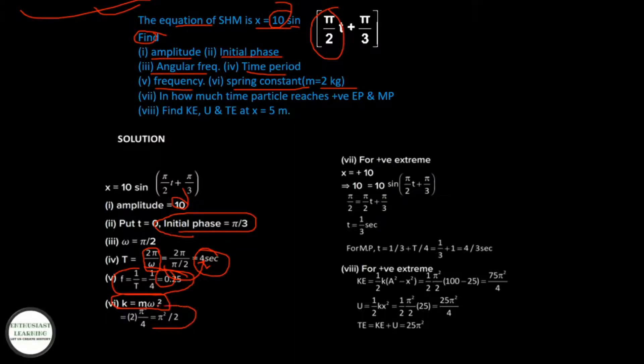(vii) In how much time does particle reach positive extreme position and mean position? For positive extreme, x = +10, where 10 = sin((π/2)t + π/3). Solving: (π/2) = (π/2)t + π/3, so t = 1/3 seconds. For mean position, t = 4/3 seconds.